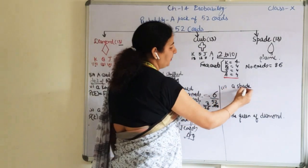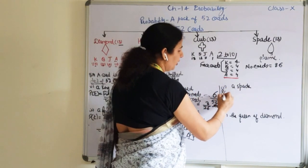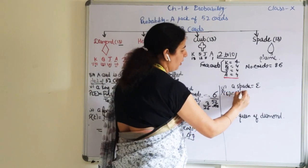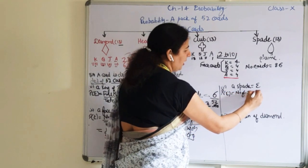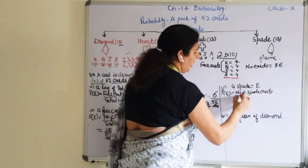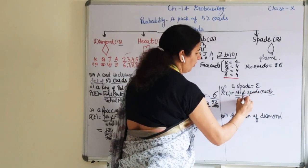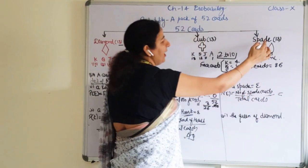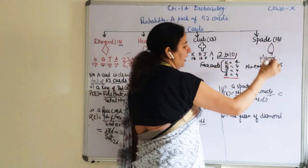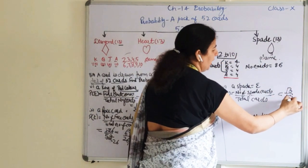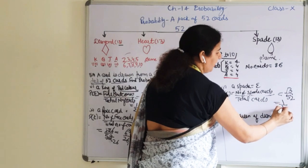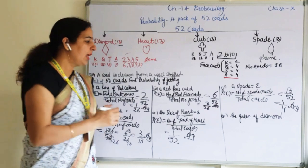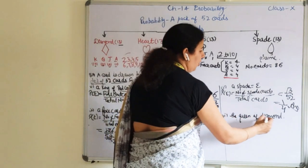Part five: find the probability of a spade. Probability of event E = number of spade cards divided by total number of cards. Spades — how many are there? We are having 13. So it will be 13/52, and the answer reduces to 1/4.